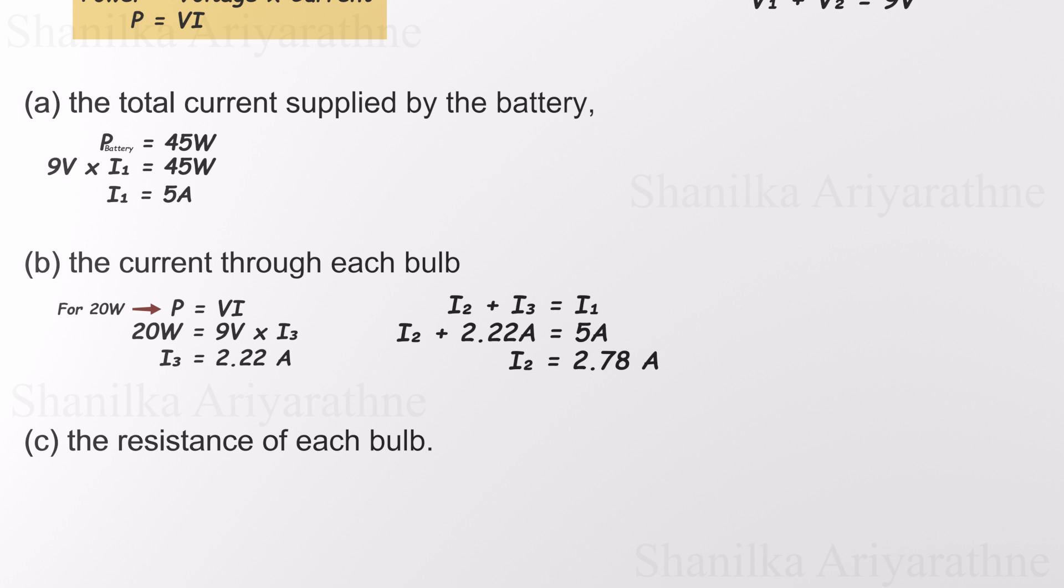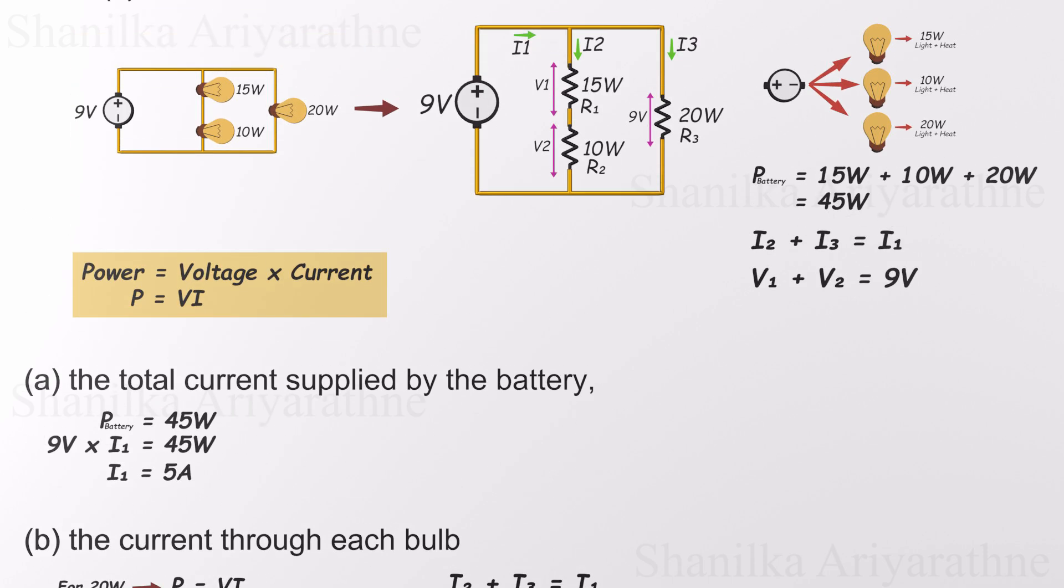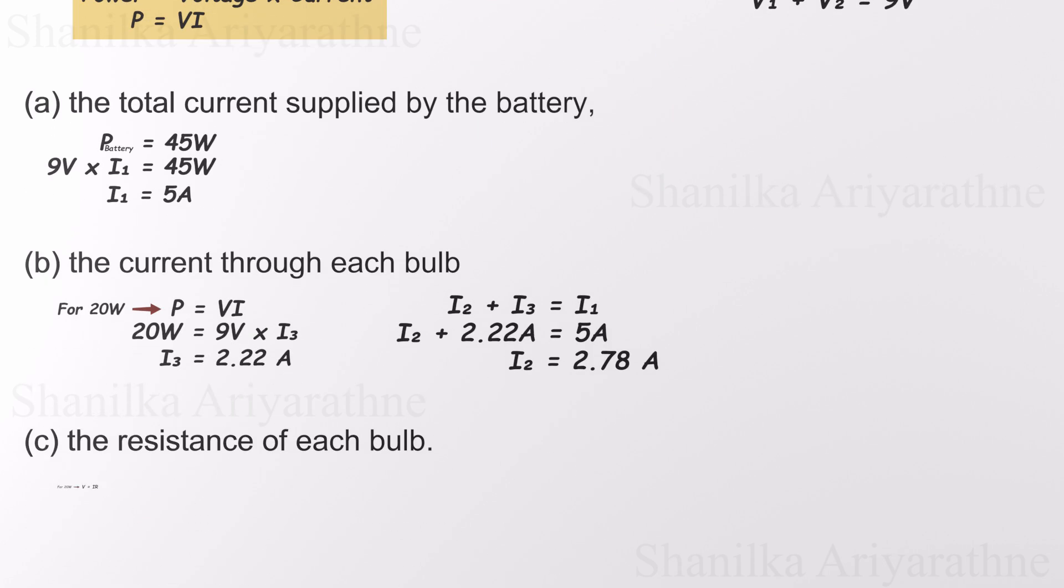Now for the final step, finding the resistance of each bulb. Let's begin with the 20-watt bulb, which is the easiest to handle because we know both the voltage across it, 9 volts, and the current flowing through it, 2.22 amps. So we just apply Ohm's law, which gives us approximately 4.05 ohms. That's the resistance of the 20-watt bulb, nice and clean.